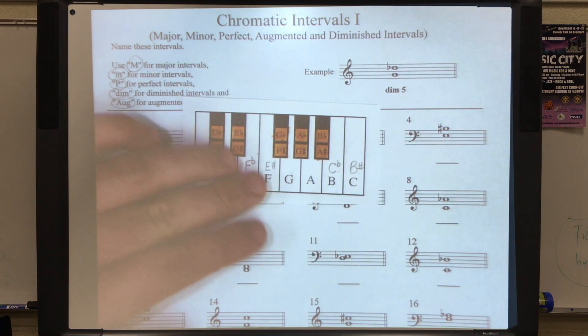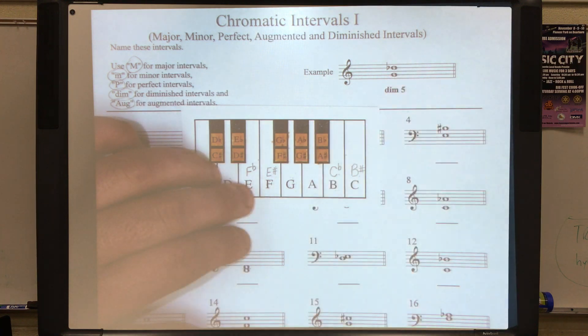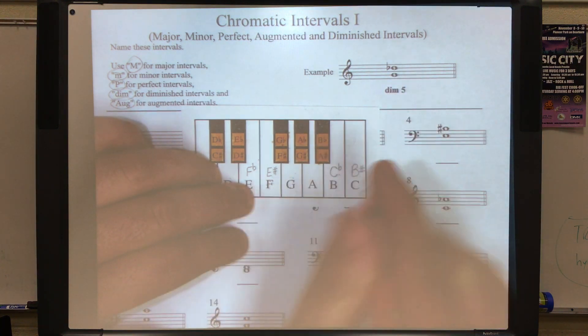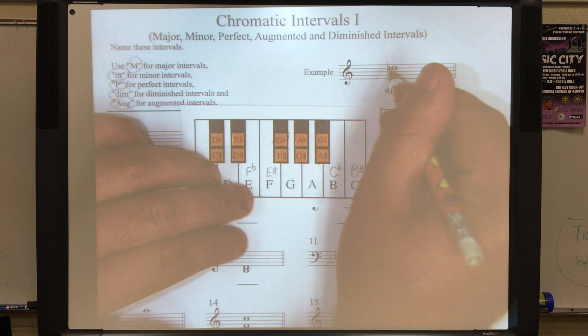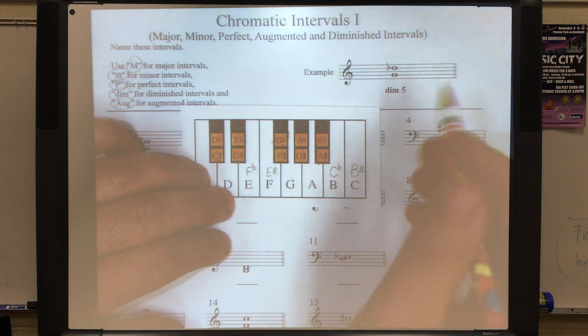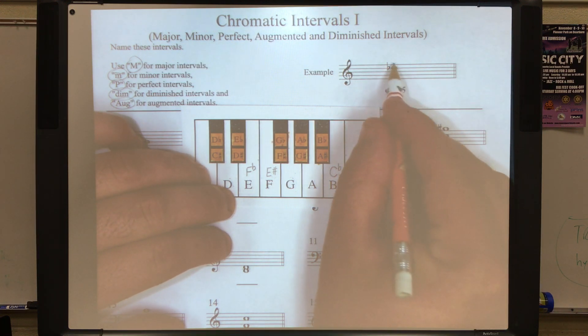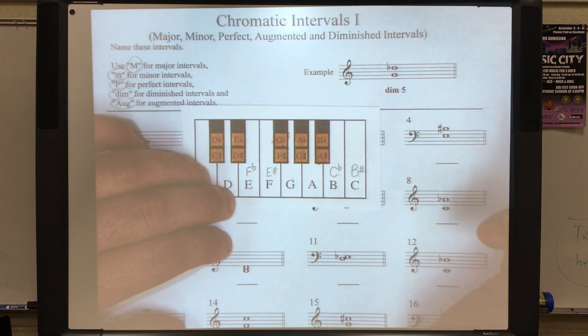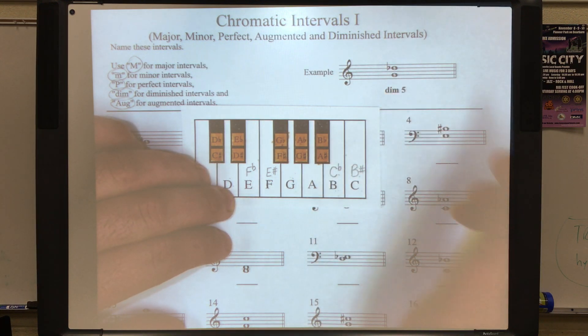Let's work through this example, diminished fifth. We've got a G to a D flat. Notice how it's one, two, three, four, five. The interval is a perfect fifth, or it would be if it weren't for the flat. So if the note is five lines apart, it's going to be diminished. Generally, the rule is when you've got a flat in the top note, it will most likely be diminished.